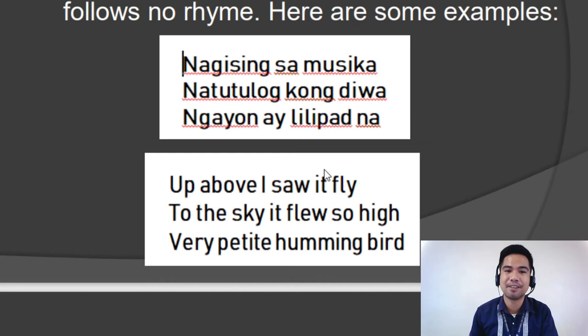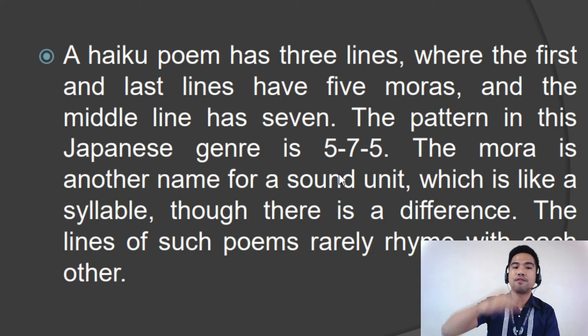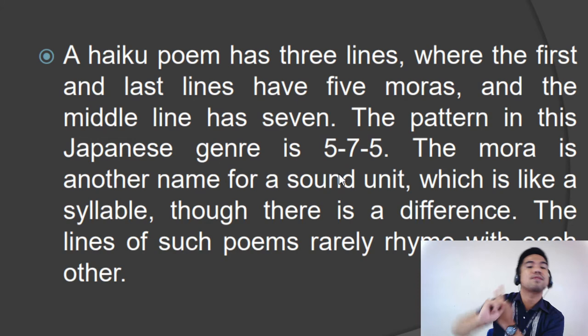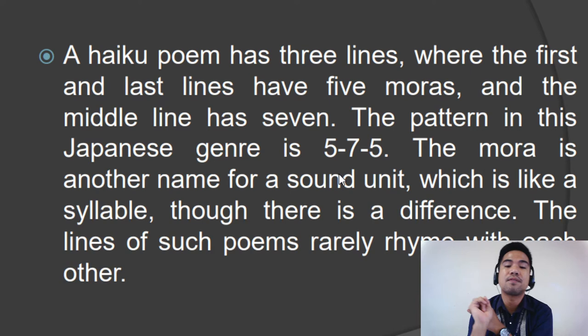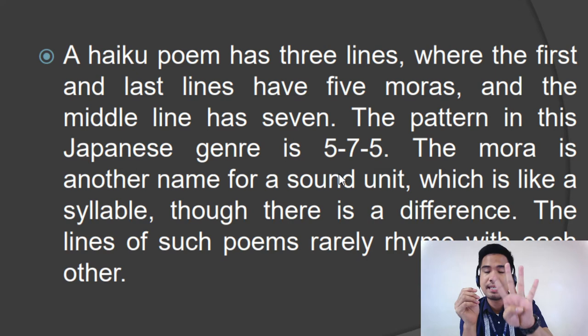I hope that is clear. Now let's proceed. Haiku. A haiku poem has three lines where the first and last line have five moras — meaning syllables — and the middle line has seven. So the first and third lines have five syllables each, while the second line has seven syllables. So there are seventeen syllables in a haiku. The mora is another term for sound unit or syllable. The lines of such poems rarely rhyme with each other — they may or may not rhyme. Bear in mind that if you're going to make a haiku, the specific themes are actually the four seasons: winter, spring, summer, and fall. Haiku originated from Japan, and Japanese haiku poets are inspired by nature and the four seasons.